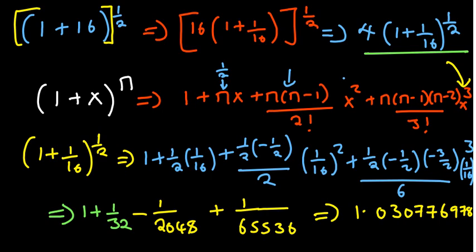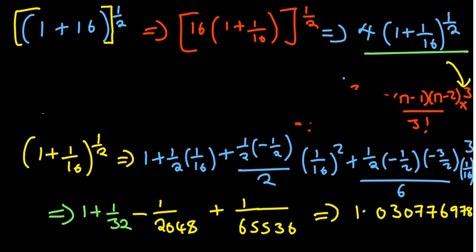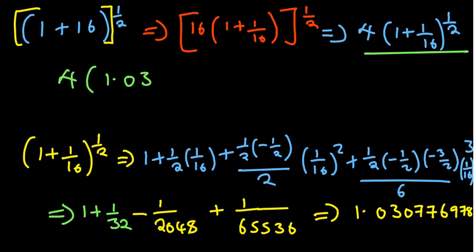Some of you are wondering, how can that be the answer? Because that number even if we multiply it by itself, it will not be able to give us 17. Take note there was a 4 that was outside. So what we've only expanded is what is inside, partially. So we have 1.030776978, which is equal to (1 + 1/16)^(1/2).